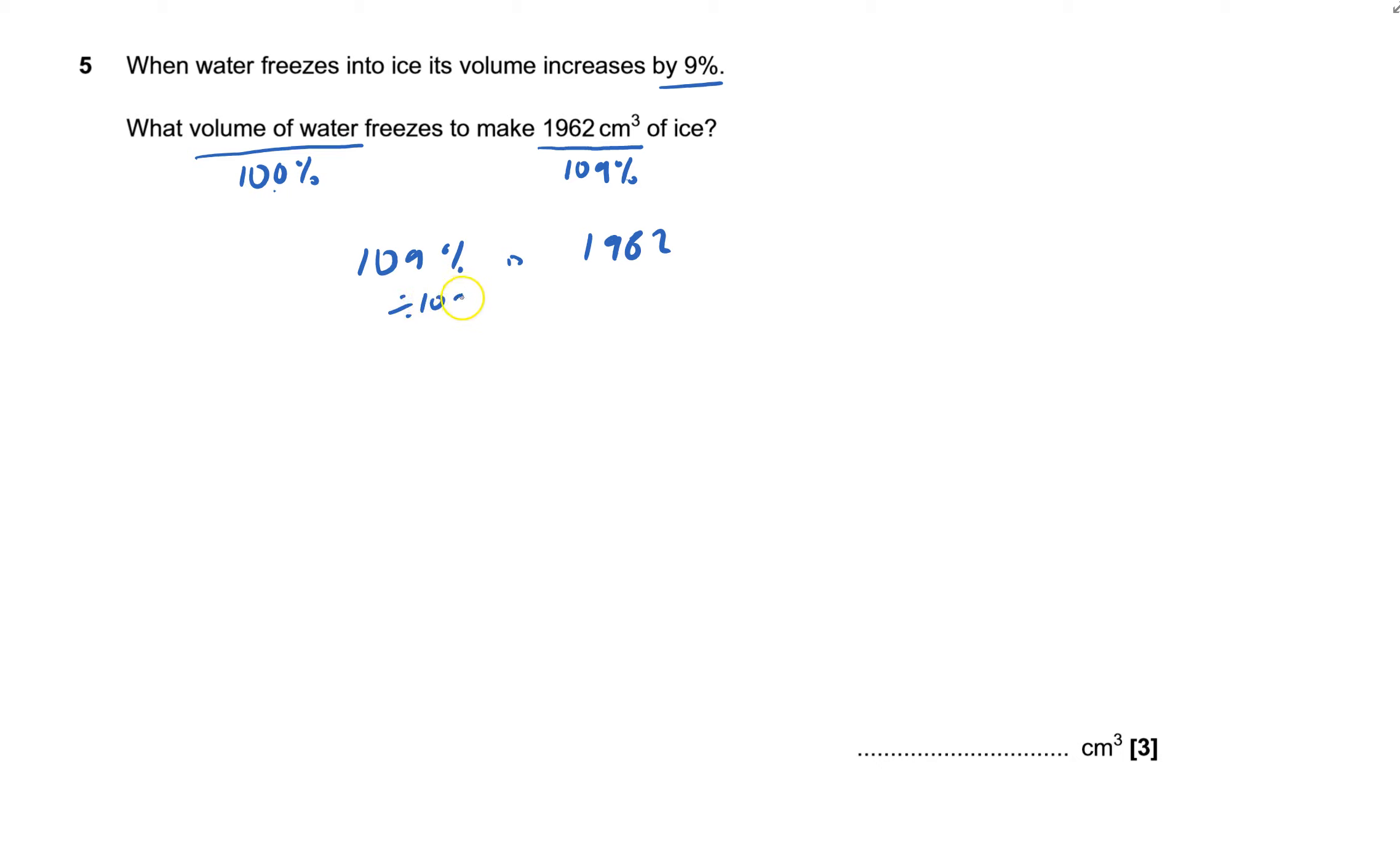So I'm going to divide this by 109 and divide this side by 109. And that will say in essence that 1 percent is 1962 divided by 109 is 18. And then times that by 100 and times this one by 100. And that will say that 100 percent is 1800.